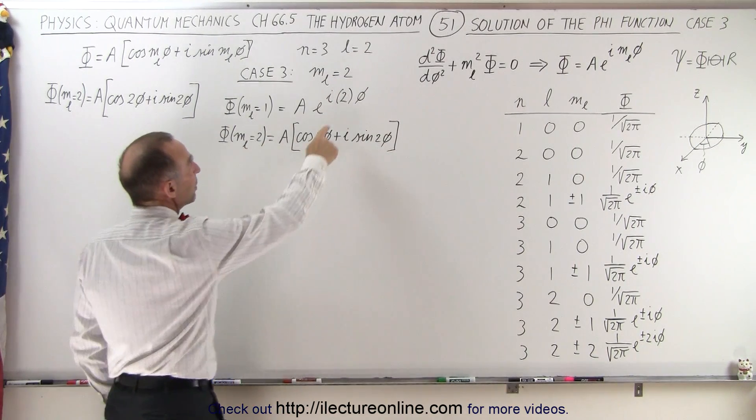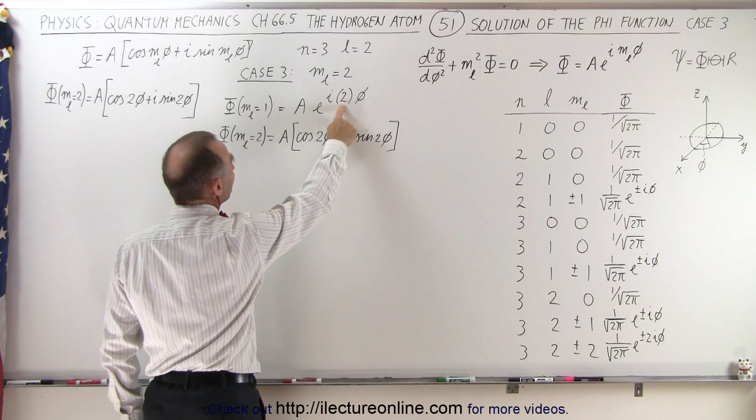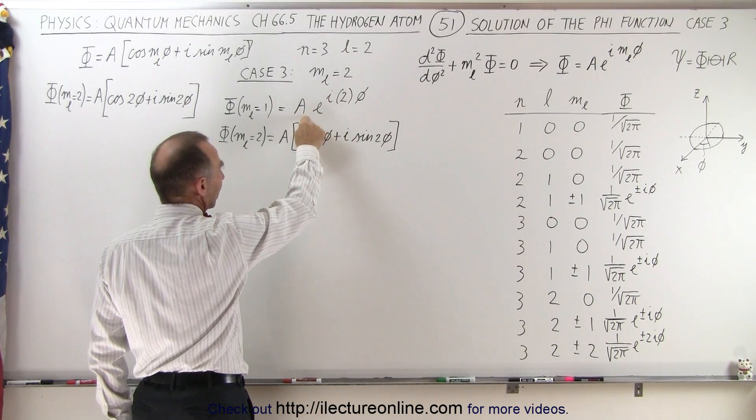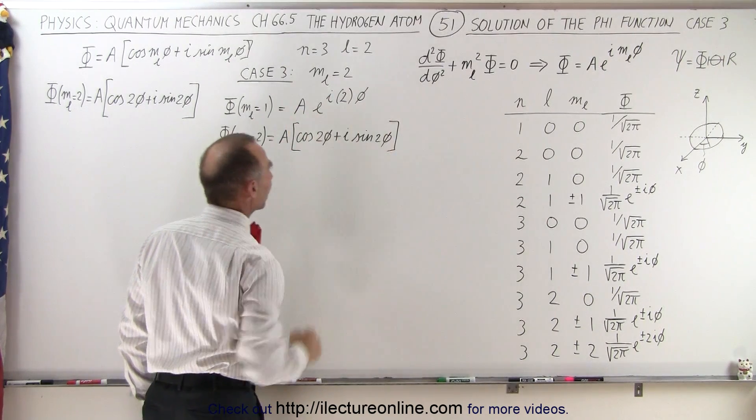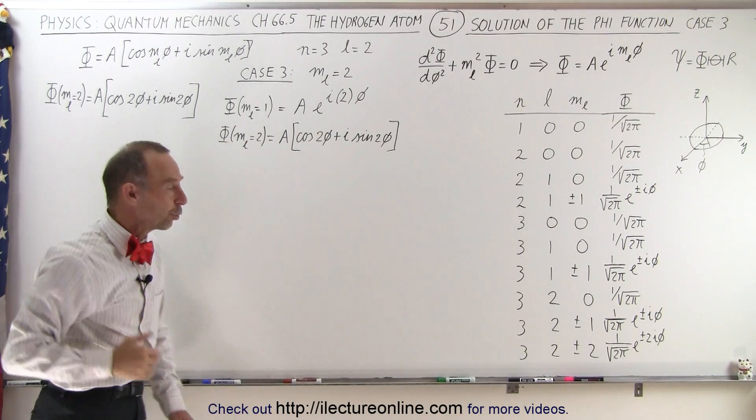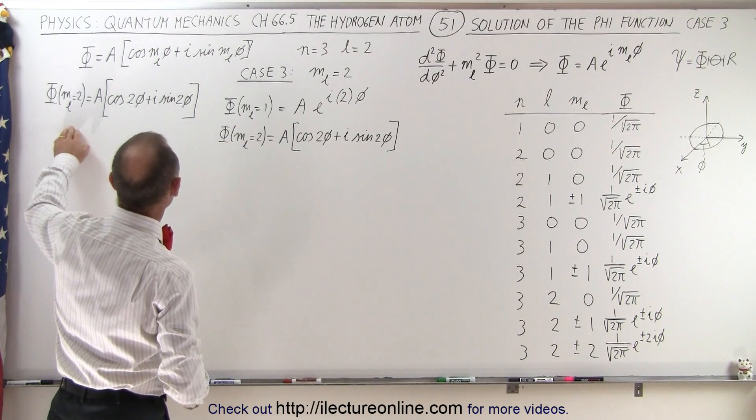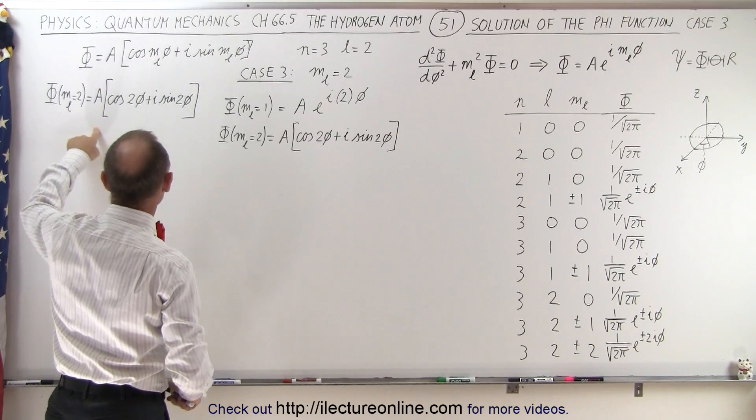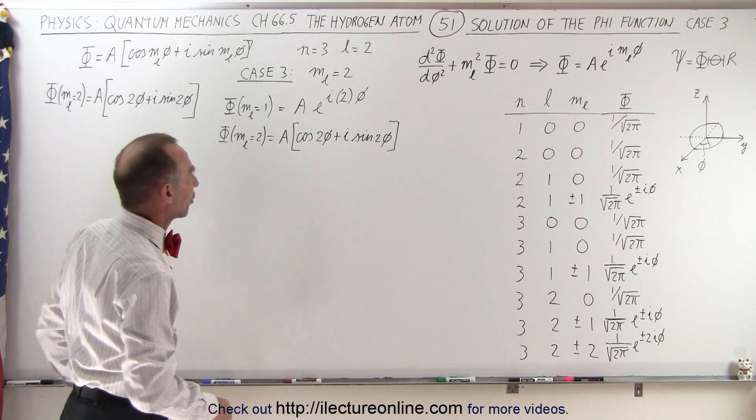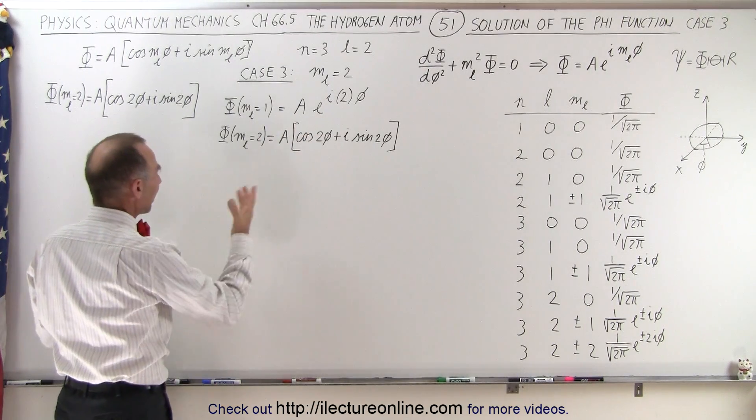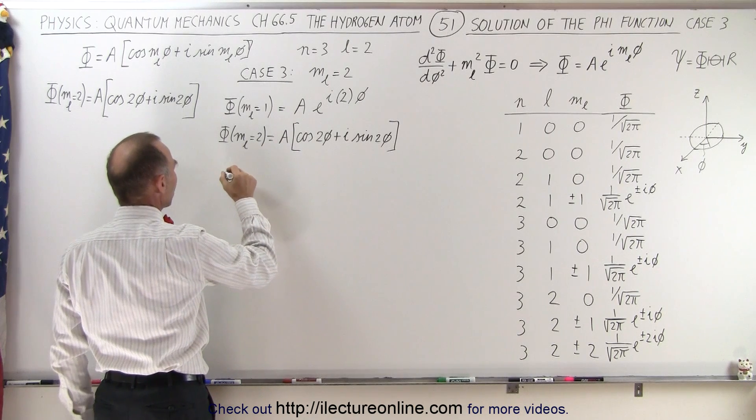In other words, the exponent here for m sub l is now equal to 2. We still have to find the correct value for a, the constant in front. So we're going to have to again do that normalization technique. And it's easier to use this form of the equation than the exponential form of the equation. So to find a, we say that to normalize the function...